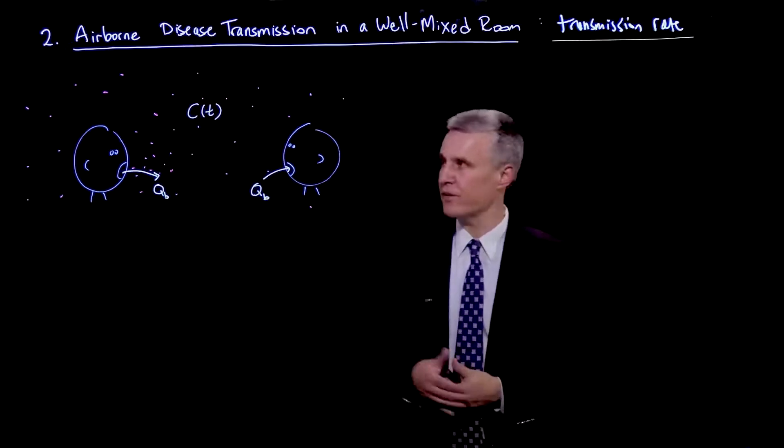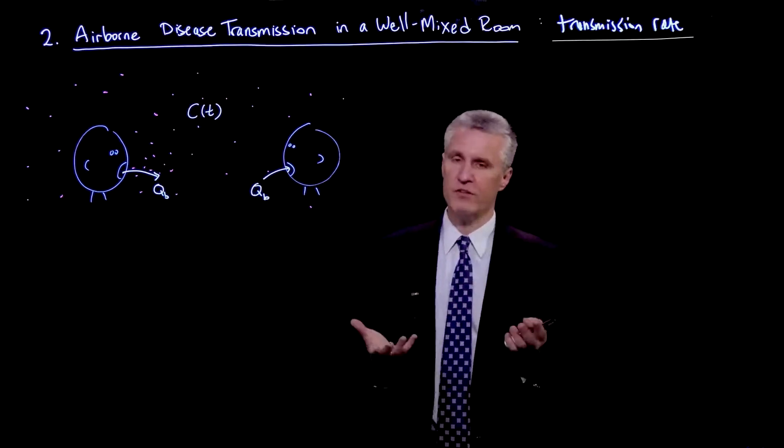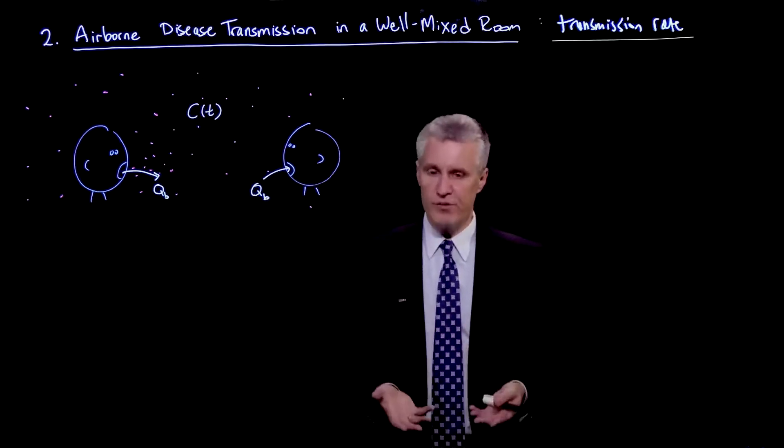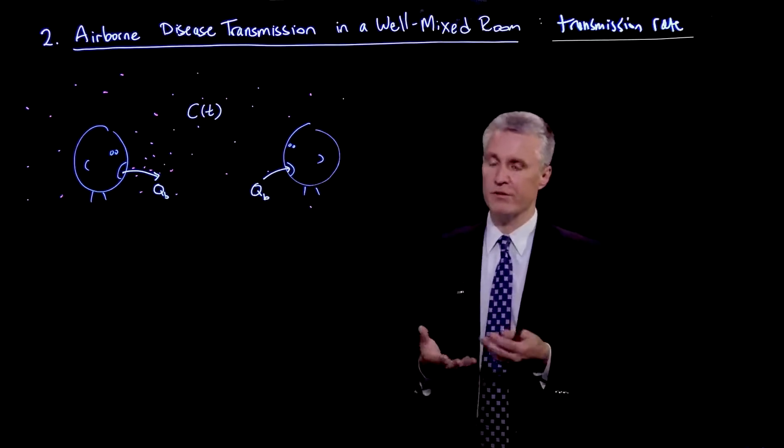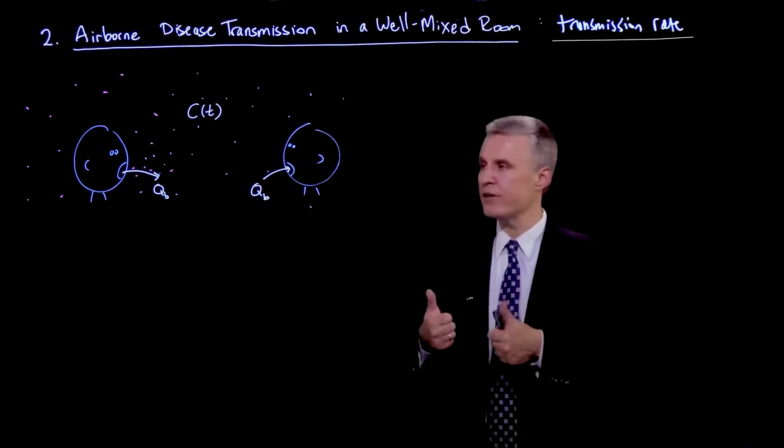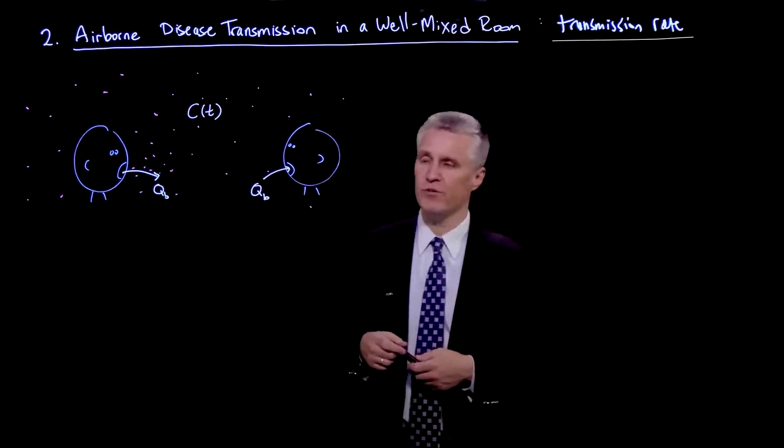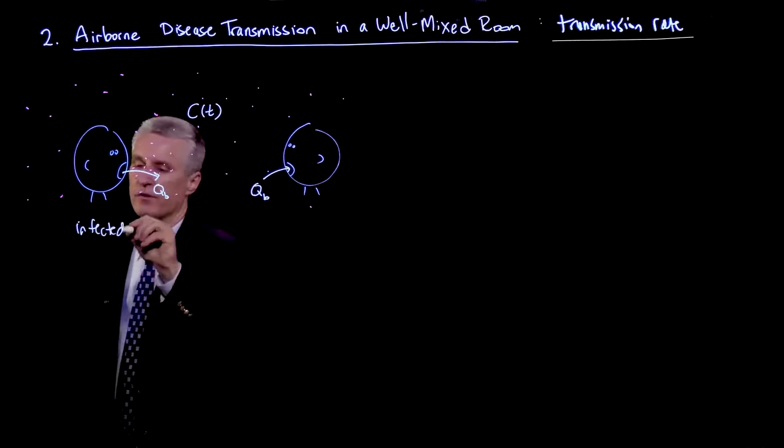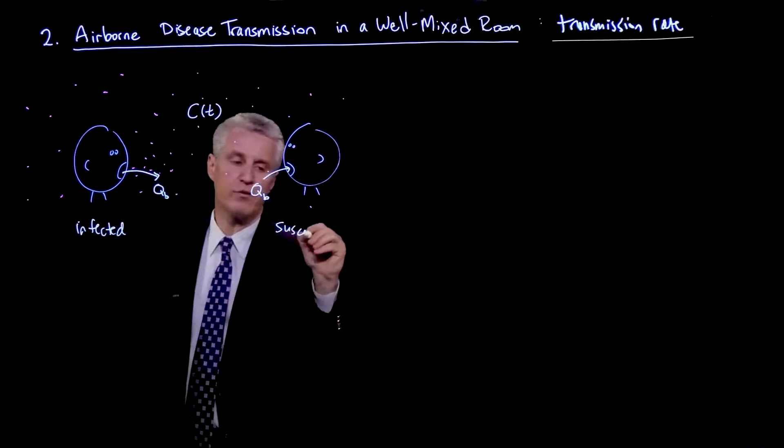So now that we've done a very simple calculation of C of t, the concentration of virions in the air per volume, which is coming from just a mass balance in a well-mixed room, let's zoom in now and think about transmission between the infected person and a susceptible person who is not yet infected.